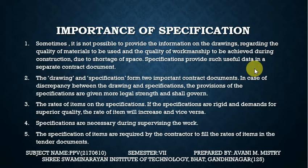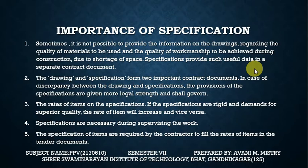In the specification contract document, what quality of material to maintain and how to achieve quality of workmanship is described — covering general specification and detailed specification. The drawings and the specification form two important contract documents. In case of discrepancy between the drawings and the specification, the provisions of the specification are given more legal strength and shall govern. If drawing and specification don't match, we consider the specification.